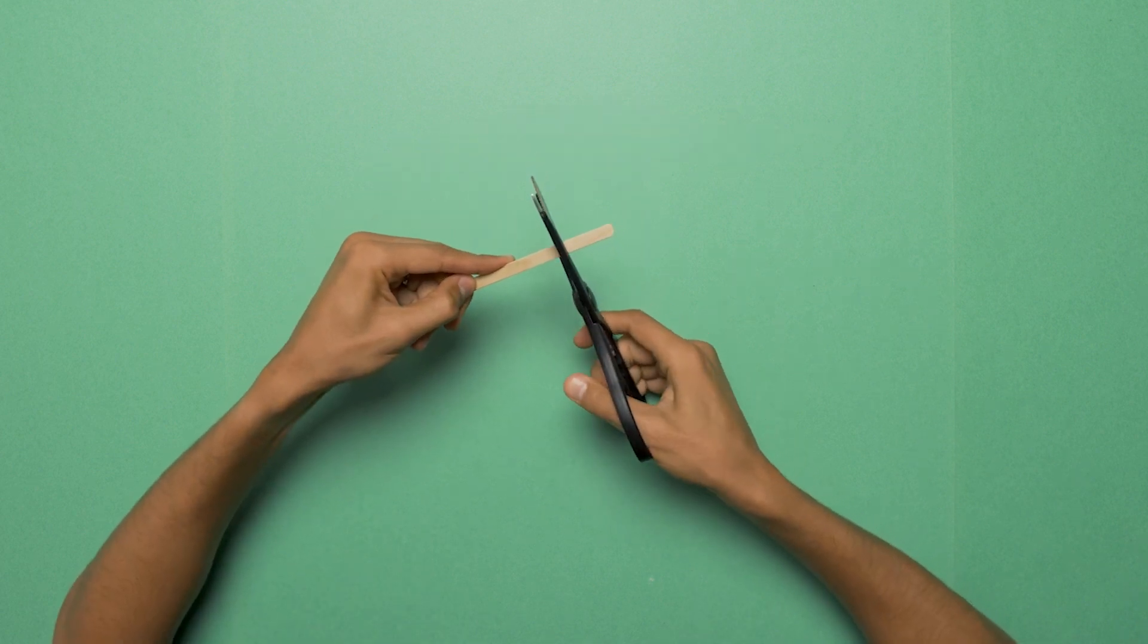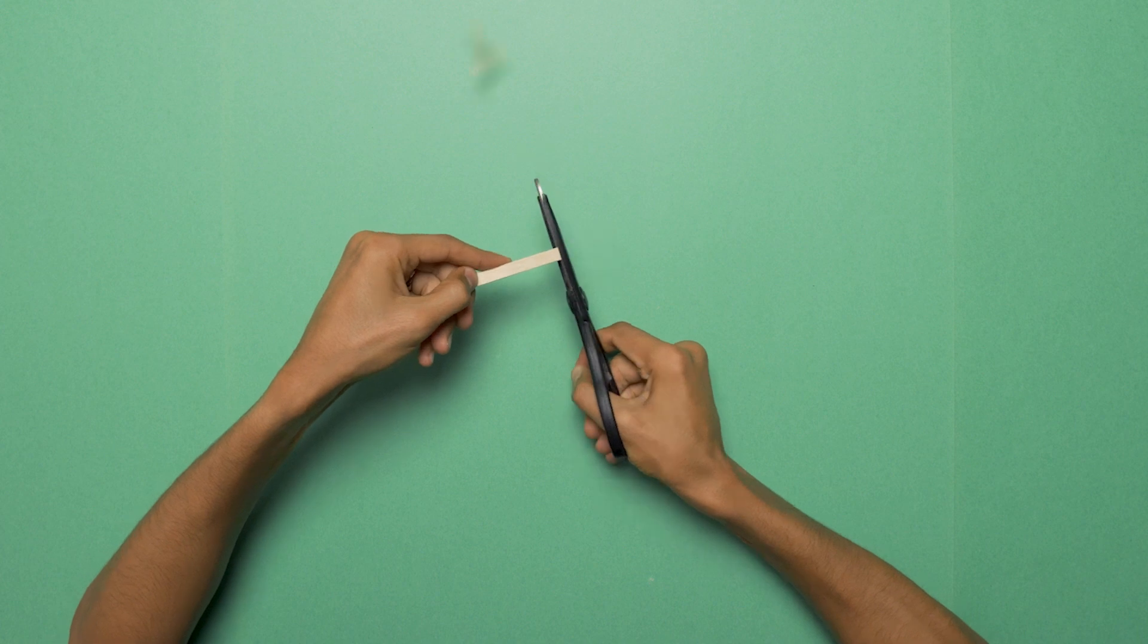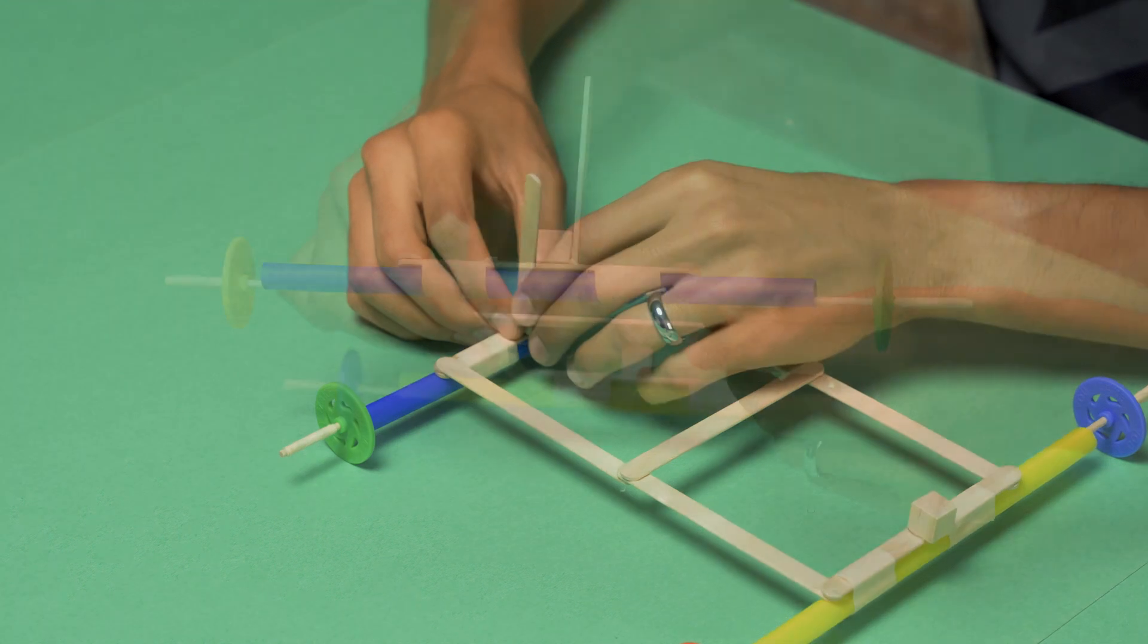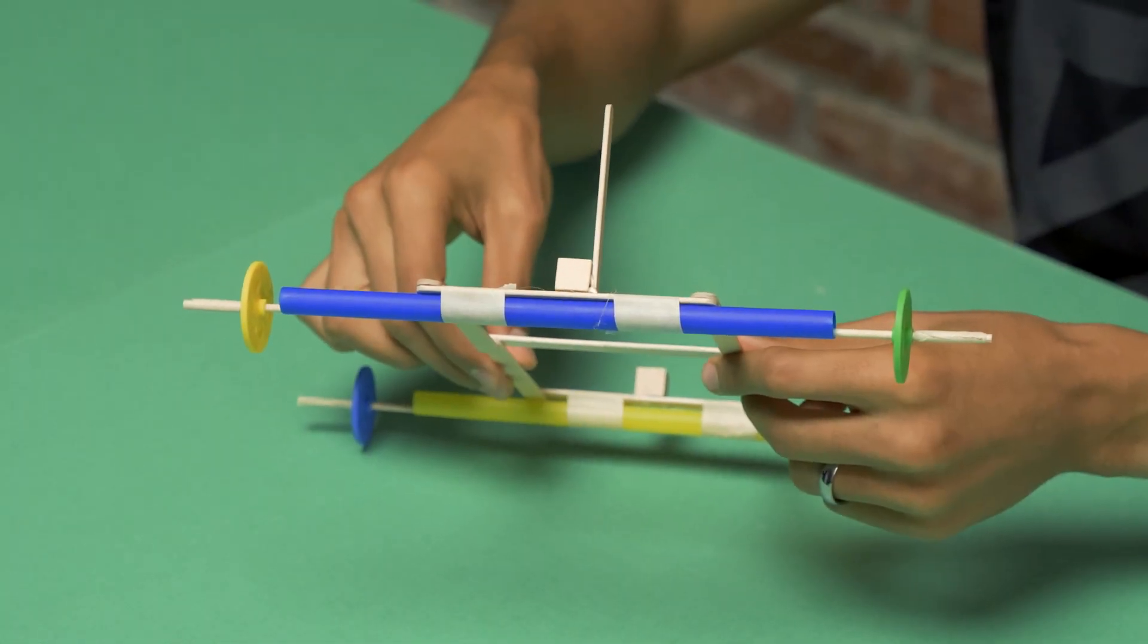Grab our final popsicle stick, and we're going to want to cut it about three quarters of the way through. And then we're going to create a little bit of a platform for our mast, and you can put it on the front or on the back.